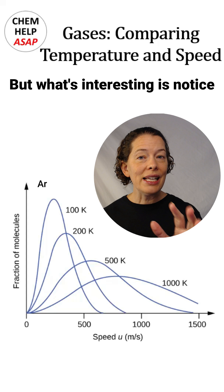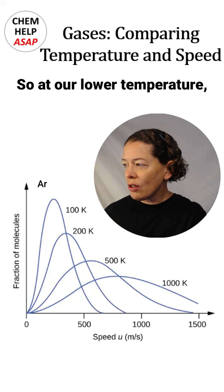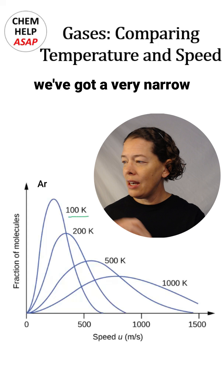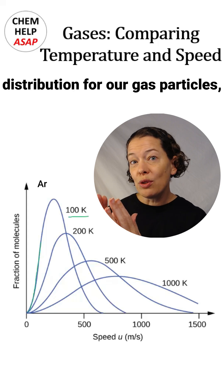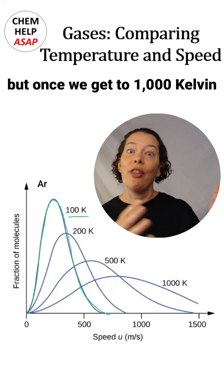But what's interesting is the distribution also changes. At the lower temperature, at 100 Kelvin, we've got a very narrow distribution for our gas particles, but once we get to 1,000 Kelvin,